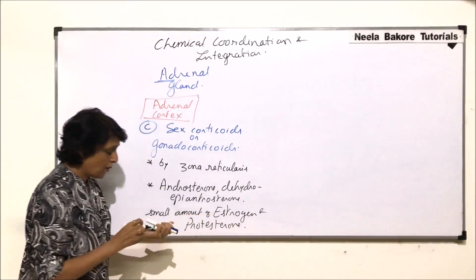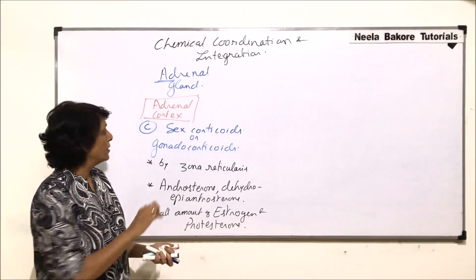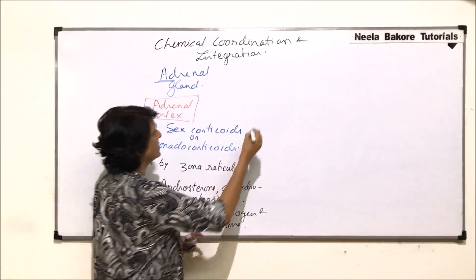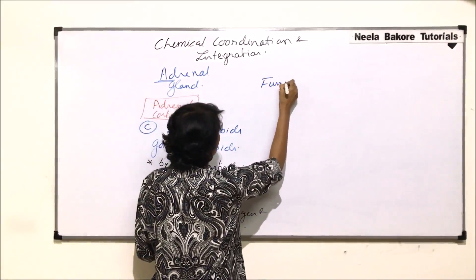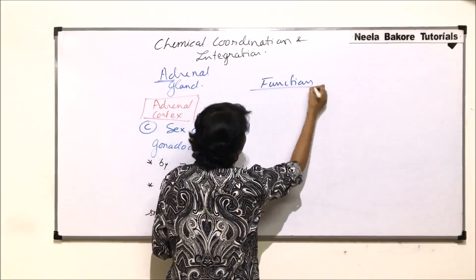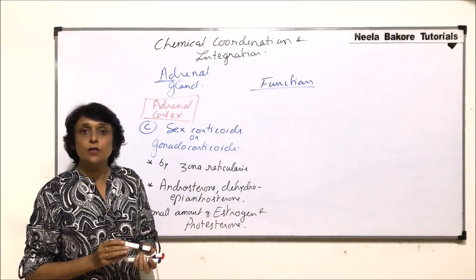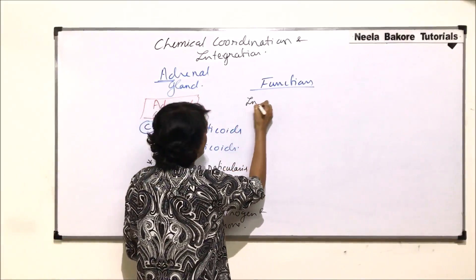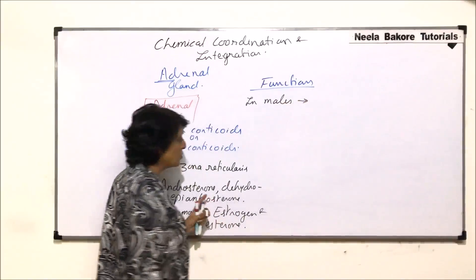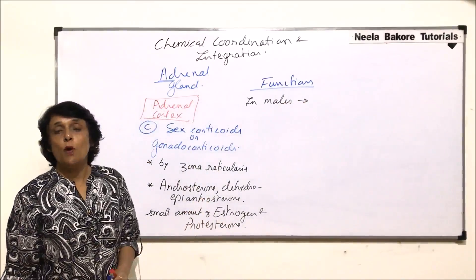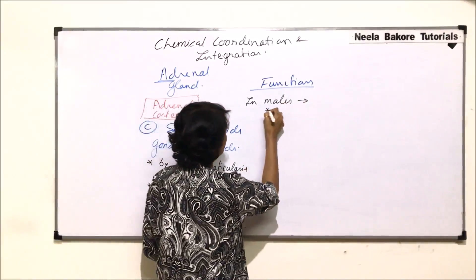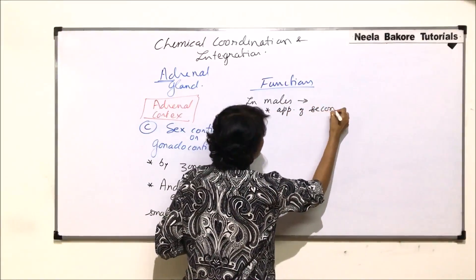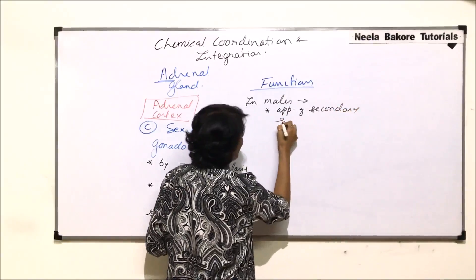These are all collectively termed as sex corticoids. The functions of sex corticoids have to be categorized separately for males and females. In the case of males, androsterones are responsible for the appearance of secondary sex characters.